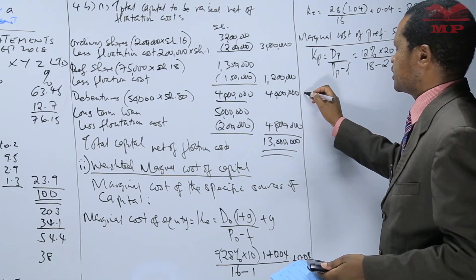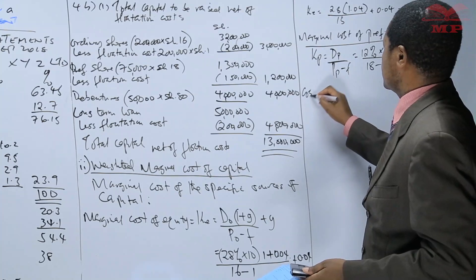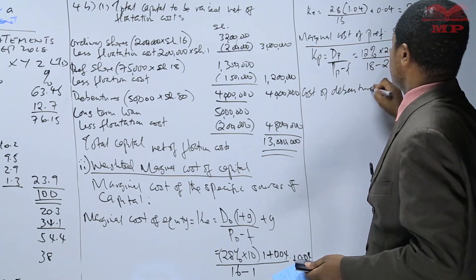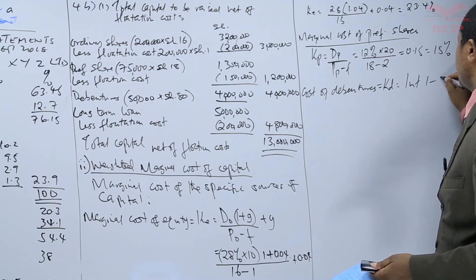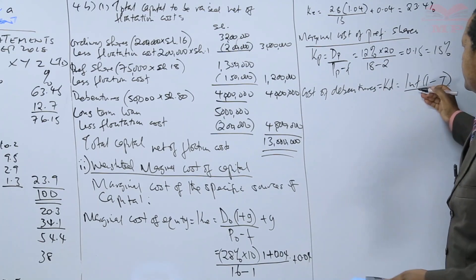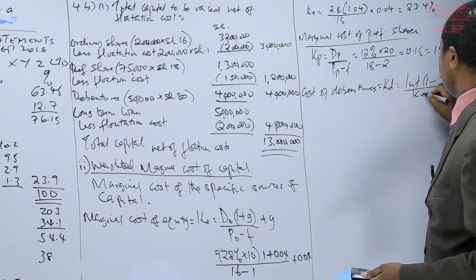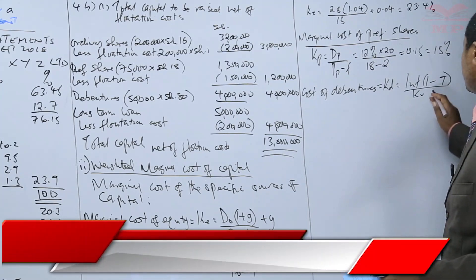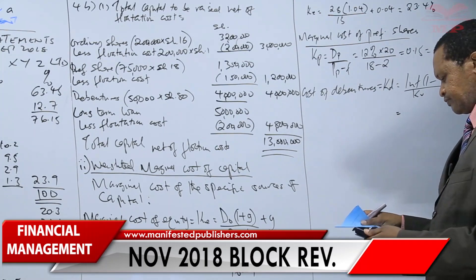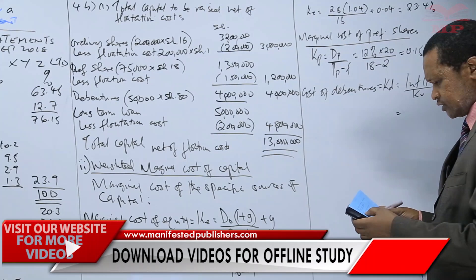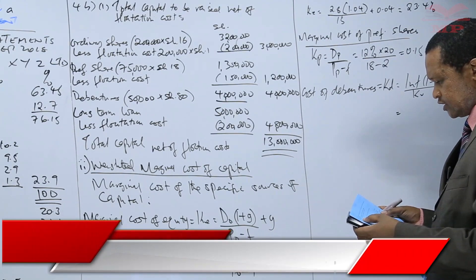The third source of capital is debentures. The cost of debentures formula: Kd is equal to the interest times (1 minus T), over the market price of debentures. From note number three, we have 18% debentures with a par value of 100 shillings, at a market price of 80 shillings.